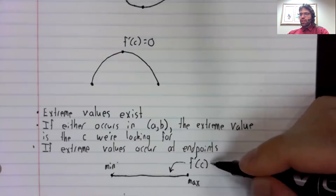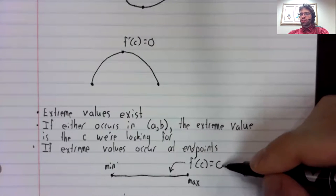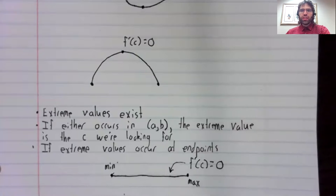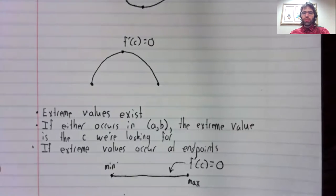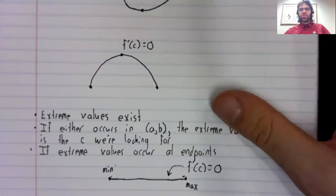And the derivative of a constant function is zero. So the derivative is zero everywhere in here. And we have once again accomplished our goal of finding a value where the derivative is zero.